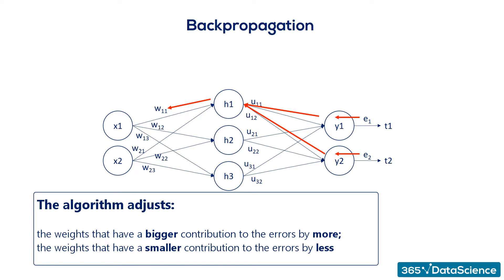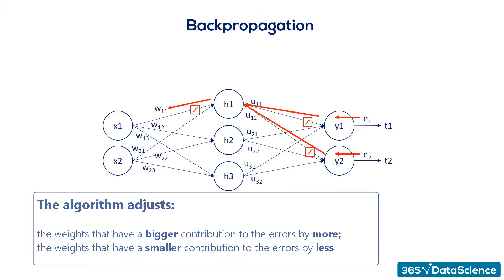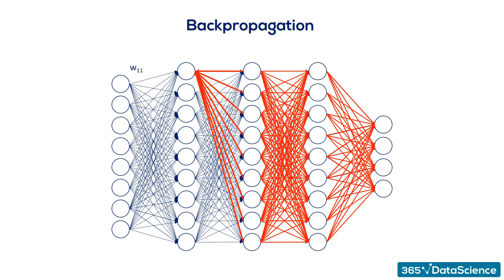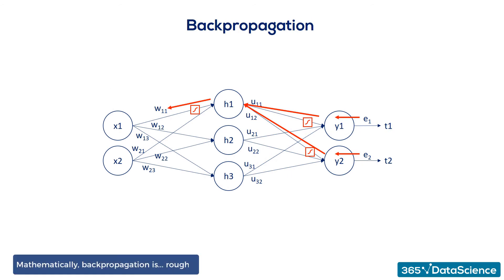A big problem arises when we must also consider the activation functions. They introduce additional complexity to this process. Linear contributions are easy, but non-linear ones are tougher. Imagine back-propagating in our introductory net. Once you understand it, it seems very simple. While pictorially straightforward, mathematically, it is rough to say the least.